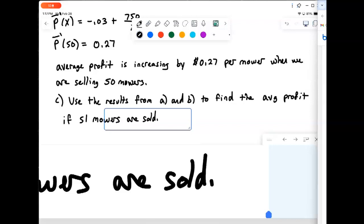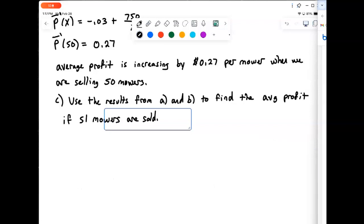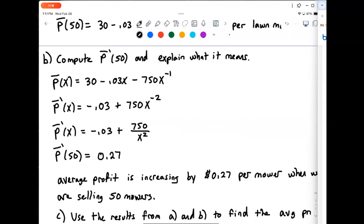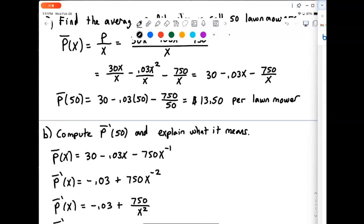If we make 51 mowers. So we could, of course, just go into P bar, go into our P bar function here, and we could plug in 51.